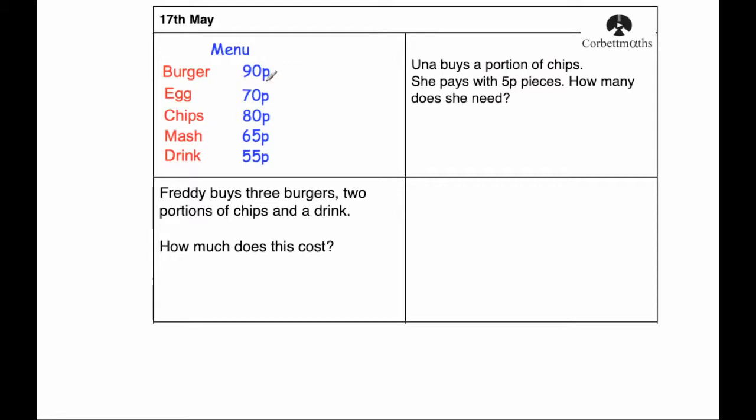Una buys a portion of chips. So chips, 80 pence. She pays with 5 pence pieces, how many does she need? Let's do 80 divided by 5. Una's getting rid of her loose change. 5 into 8 goes once, remainder 3. 5 into 30 goes 6 times, so she would pay with 16 5 pence pieces.